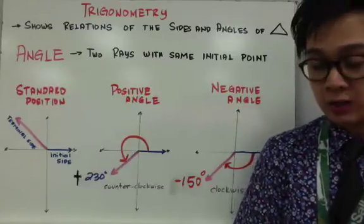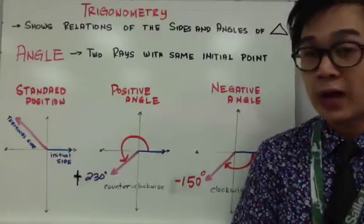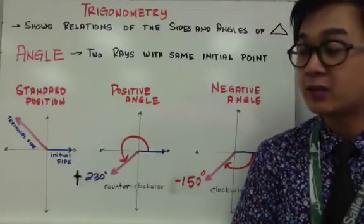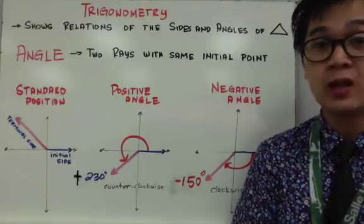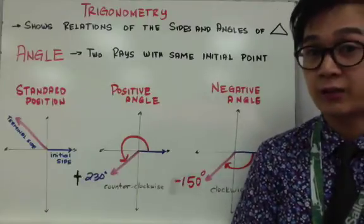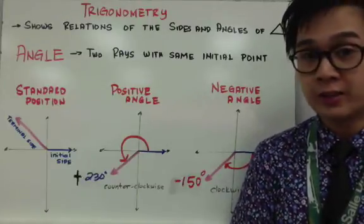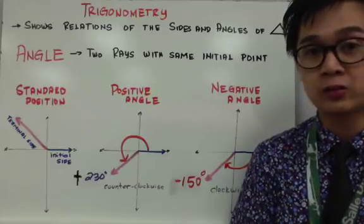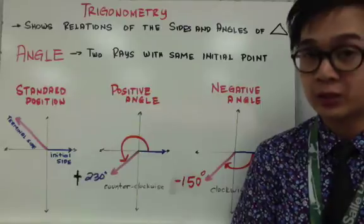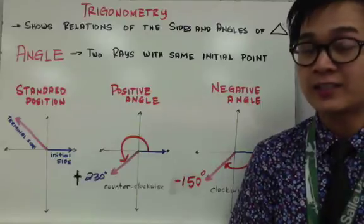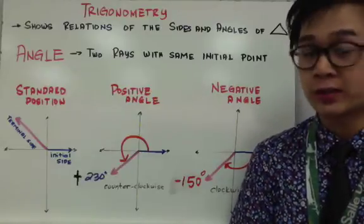In geometry, we only measured right triangles, and we used the Pythagorean theorem to be able to measure the angles and the sides of a given triangle. In trigonometry, we are not just limited to right triangles — we can use other types of triangles and measure their angles and side lengths.